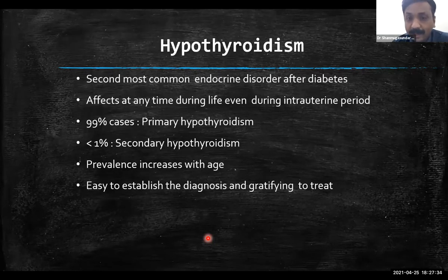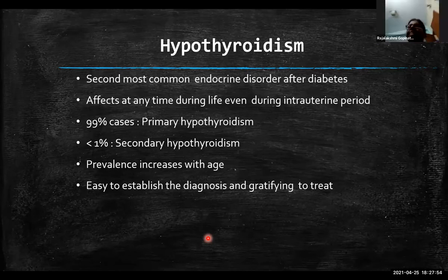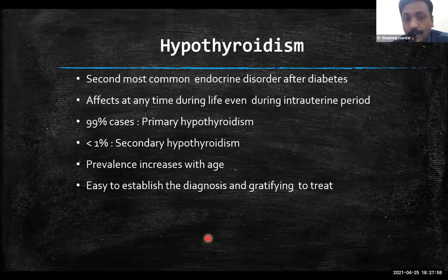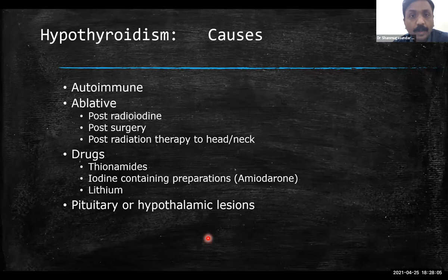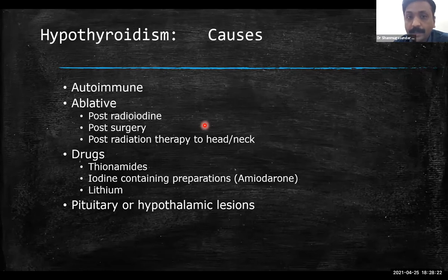Coming to hypothyroidism — this is a very common disease; probably after diabetes, it is one of the most common endocrine disorders. It can affect any time during life, even during the intrauterine period. Most common cause is primary hypothyroidism; secondary hypothyroidism is very rare. The common cause is autoimmune — due to anti-TPO or anti-thyroglobulin antibodies. Other causes include post-radioiodine therapy, post-surgery, post-radiation therapy to the head and neck, and rarely drugs like amiodarone or lithium.